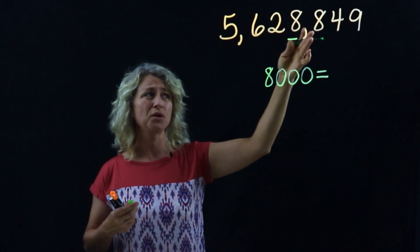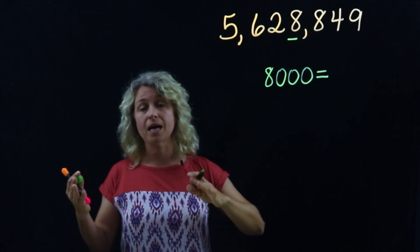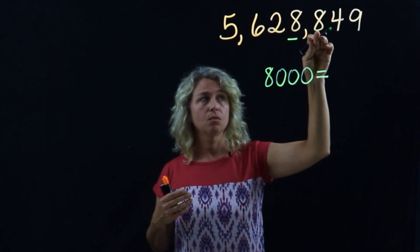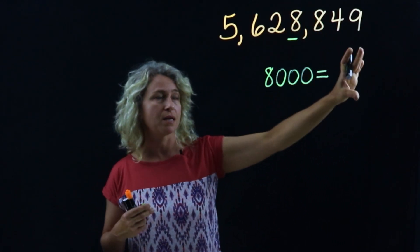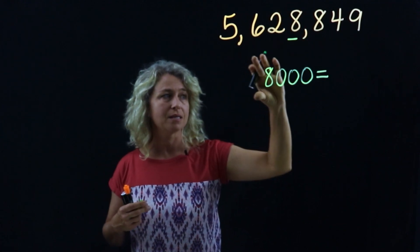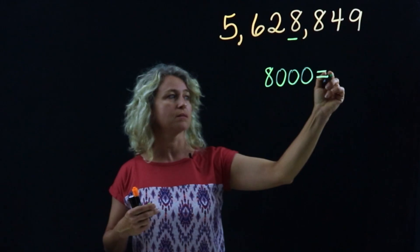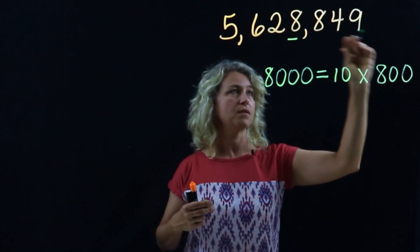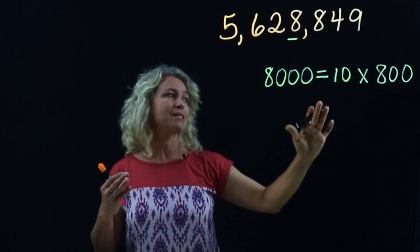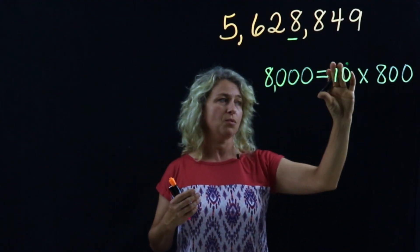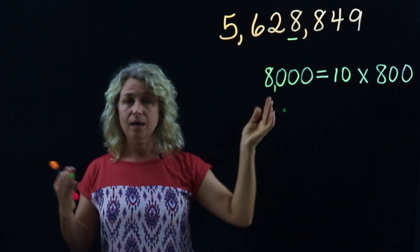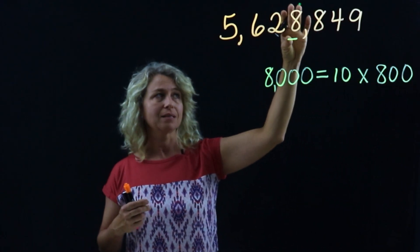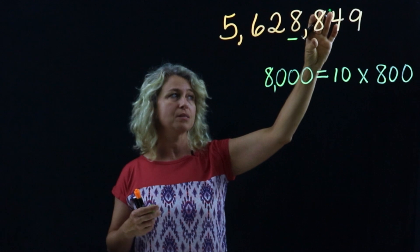This eight is in the thousands place, so its value is eight thousand. Is this value ten times more, or ten times less than the other eight? Let's write it out: eight thousand is ten times eight hundred. When you multiply with zeros, eight hundred times ten, you're just adding a zero. That makes sense. So eight thousand is ten times eight hundred.